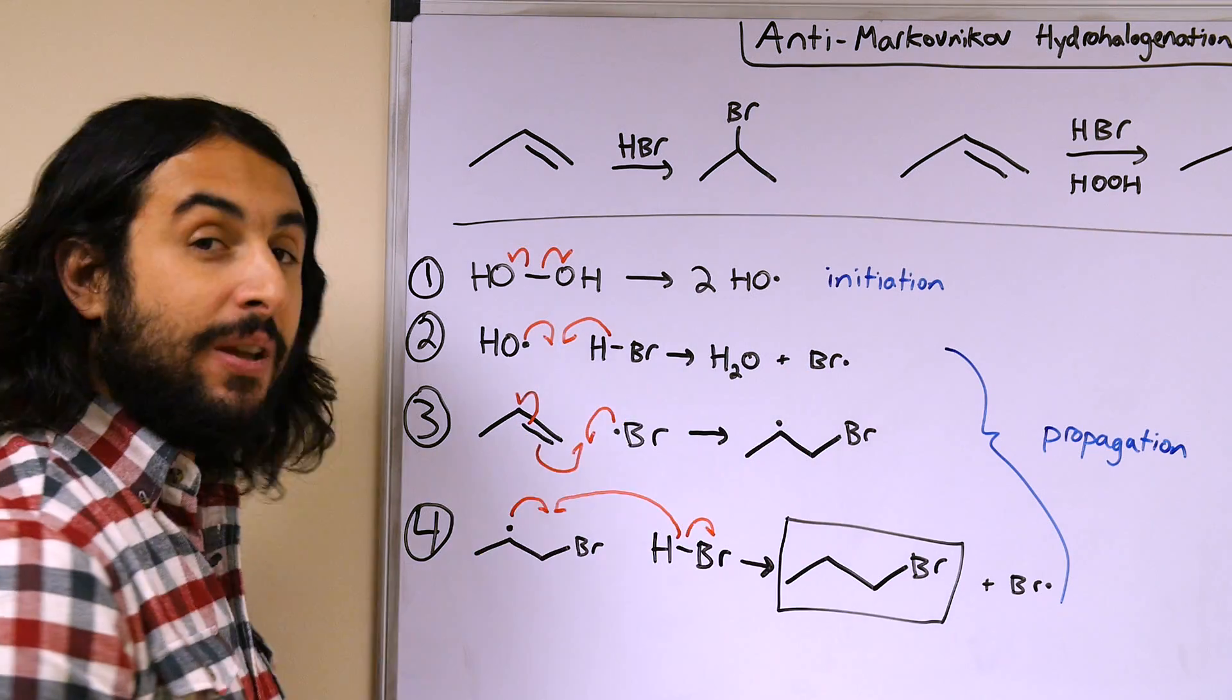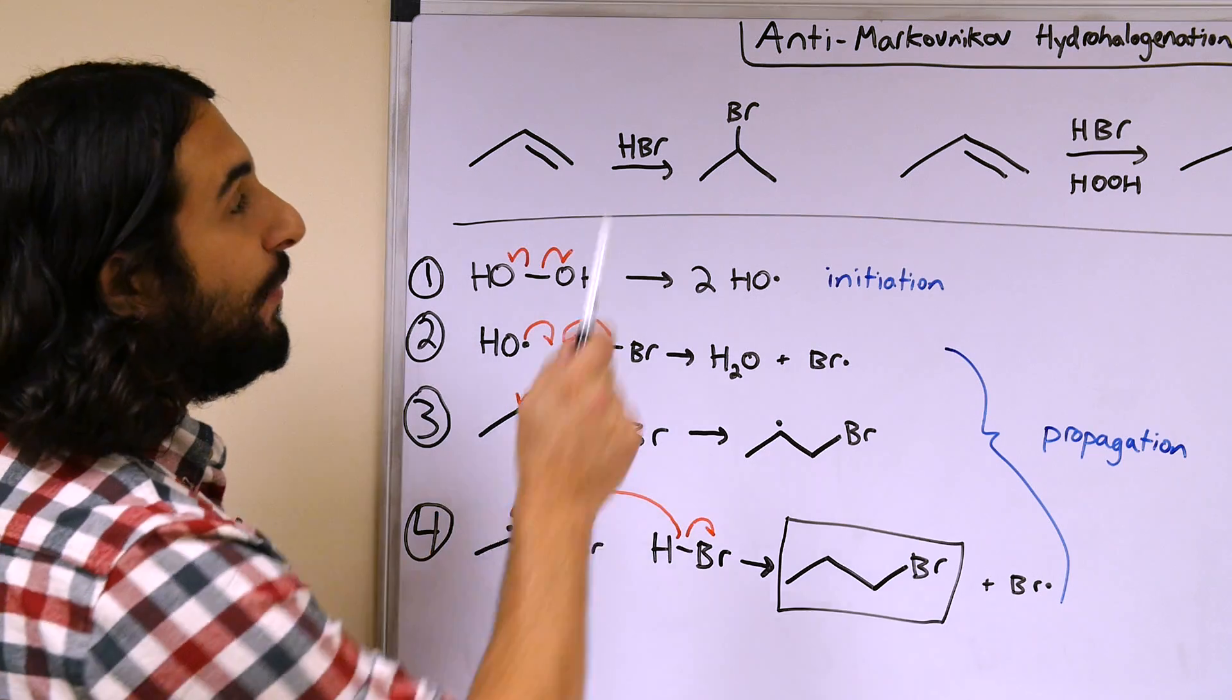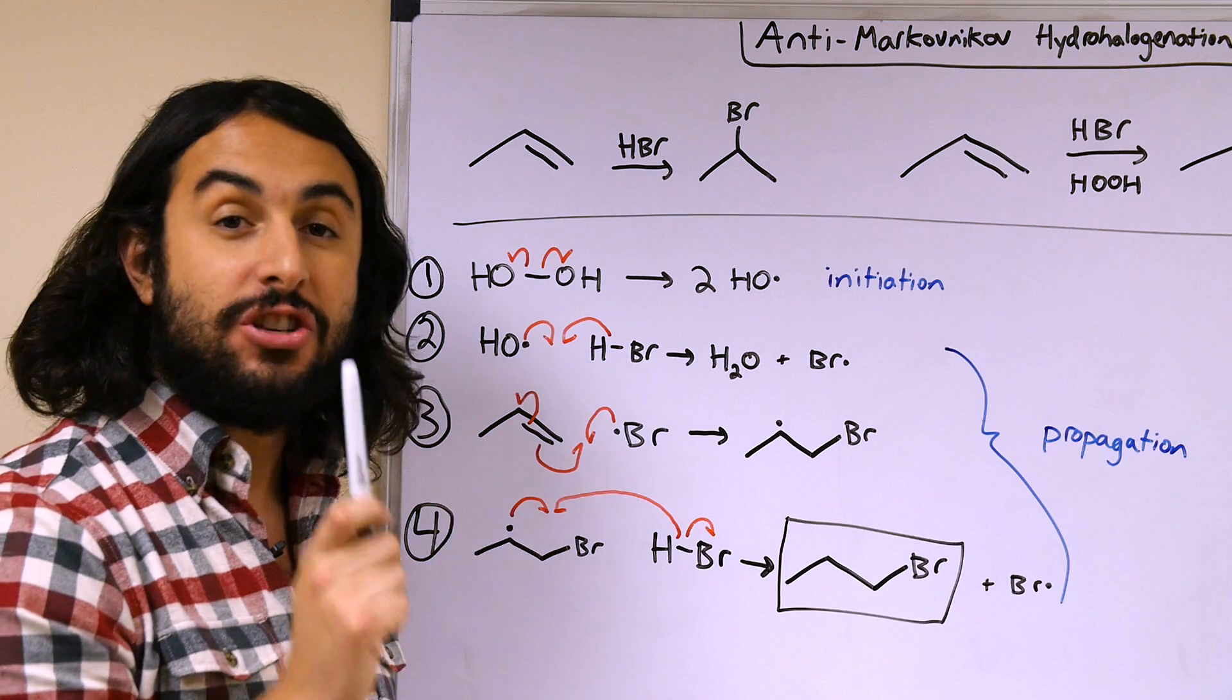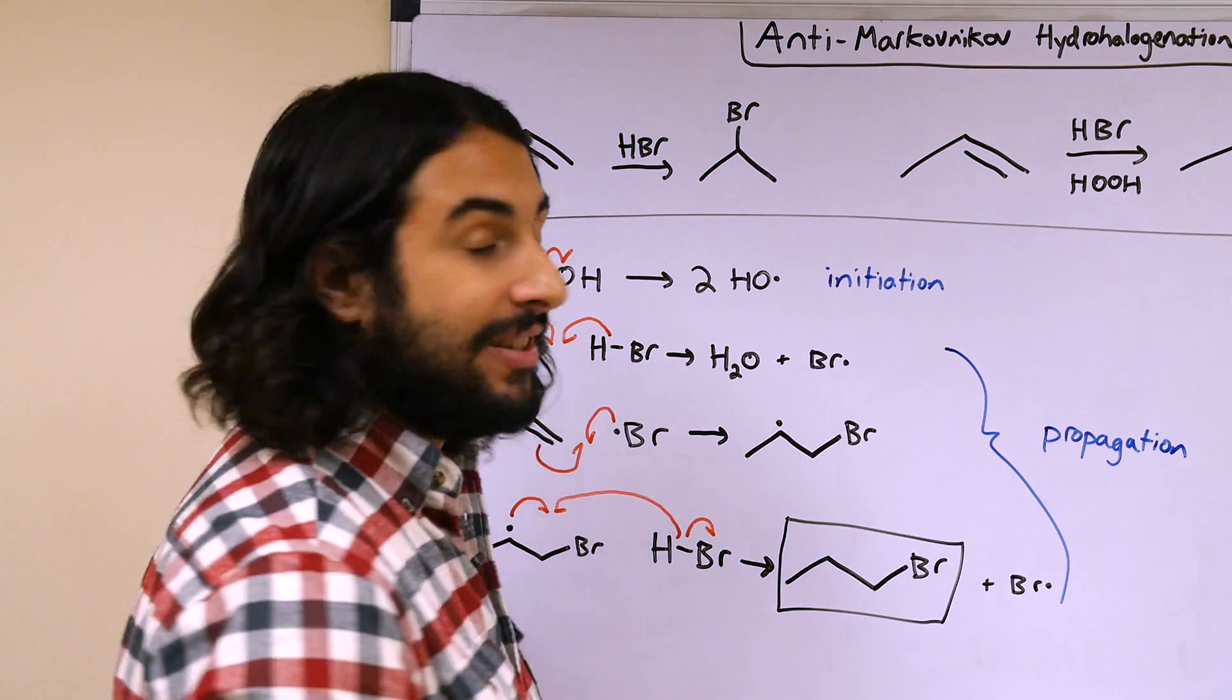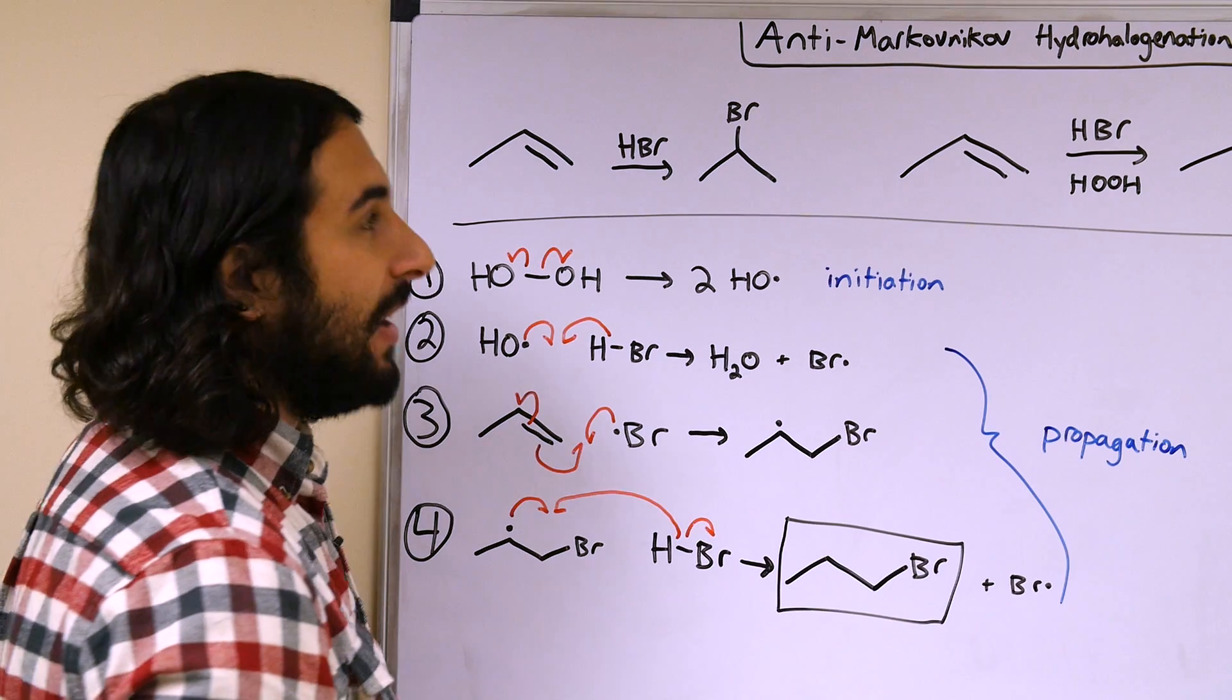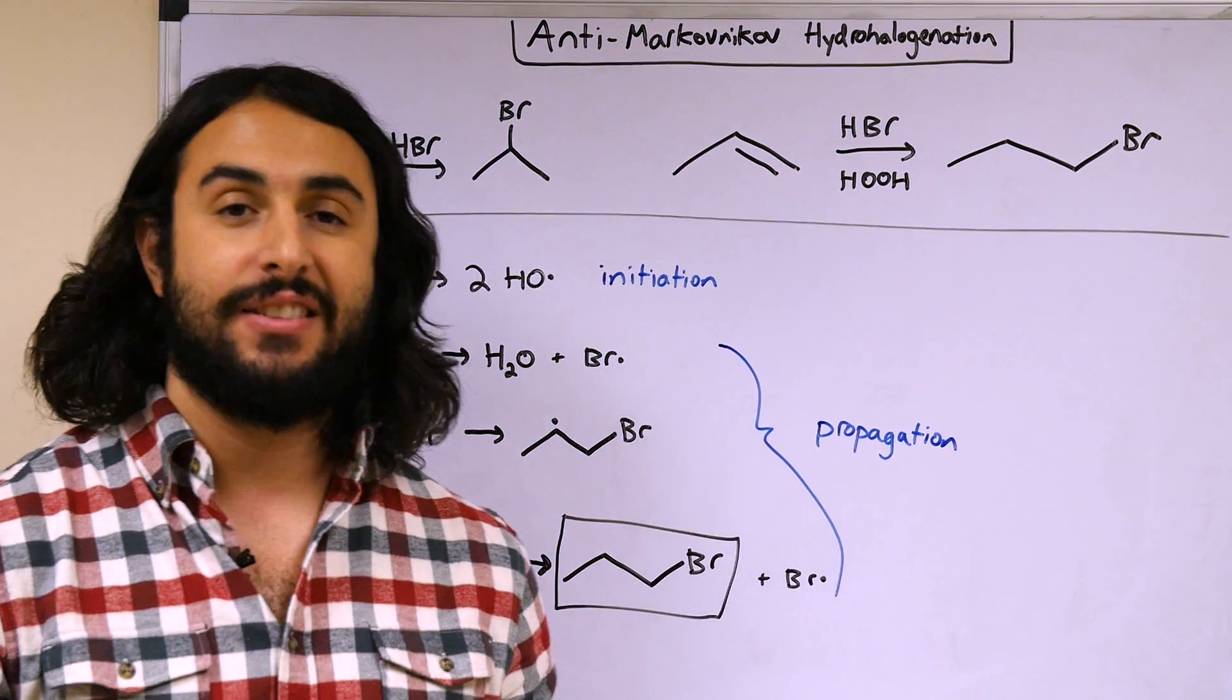So once again, hydroxyl radical initiates, propagates the existence of the bromine radical, and then the bromine radical goes ahead and adds in regiospecific manner, specifically in an anti-Markovnikov manner, so that it generates the more stable of the possible alkyl radical intermediates. So that will shed some light on the mystery. We understood the mechanism before for the Markovnikov hydrohalogenation, and now we know the mechanism for the anti-Markovnikov variety as well.